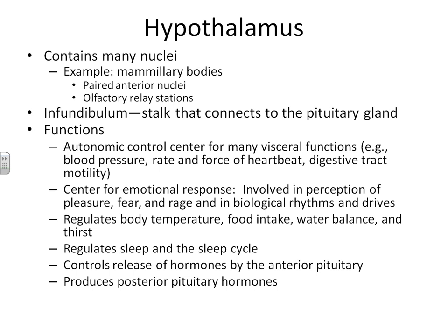The hypothalamus is the area where you can perceive things that you turn into emotions, such as pleasure, fear, and rage. Your hypothalamus also helps you regulate things by monitoring different levels of chemicals in your blood — your body temperature is regulated this way, whether you're hungry or not, whether you are thirsty, and whether you need to urinate. All of these feelings must migrate through the hypothalamus.